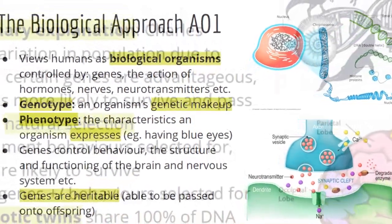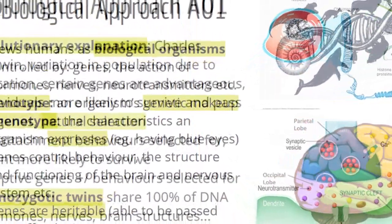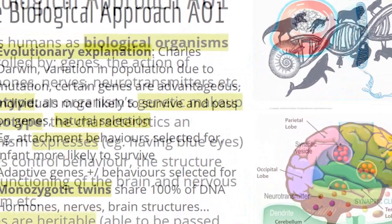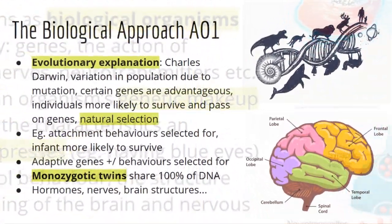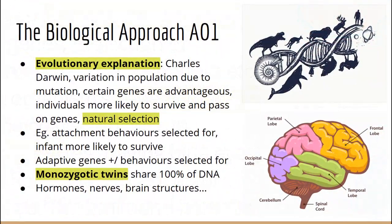Heritable characteristics are transmissible from parent to offspring. Charles Darwin proposed the theory of natural selection. He argued that genetically determined characteristics or behaviors that enhance our chances of survival and reproduction will be passed on to the next generation and become more common in a population, whereas traits which do not enhance survival will gradually disappear.